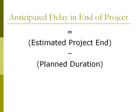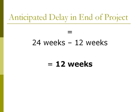The anticipated delay in the end of the project is the difference between the current estimated project end and the planned duration. As previously calculated, the current estimated project end is 24 weeks and the planned duration is 12 weeks. Therefore, the anticipated delay in the end of the project is 12 weeks.